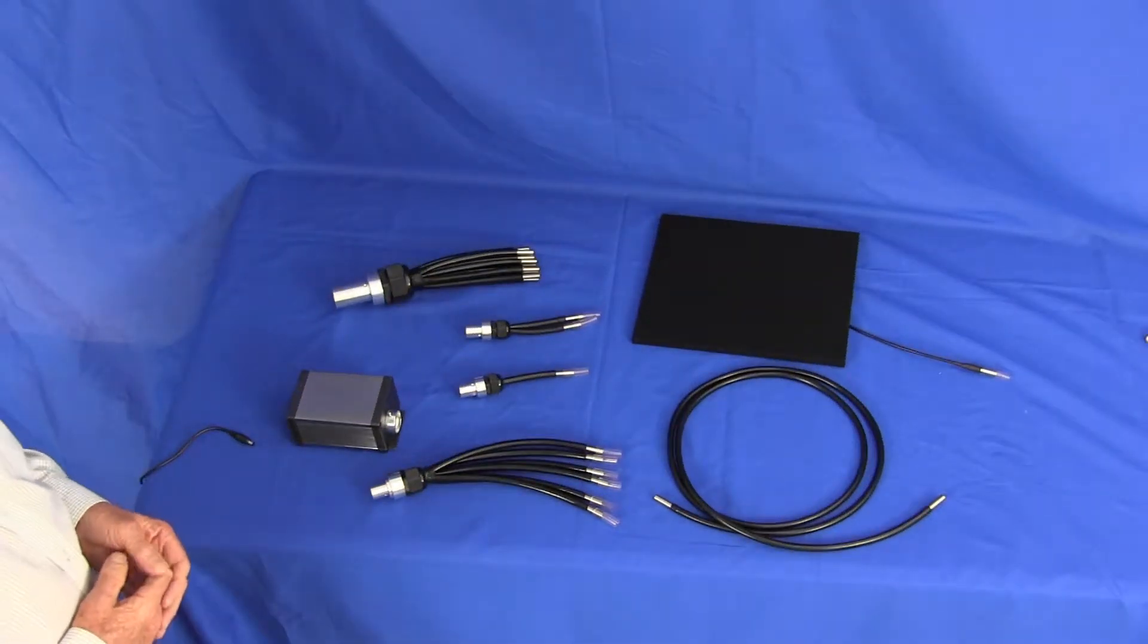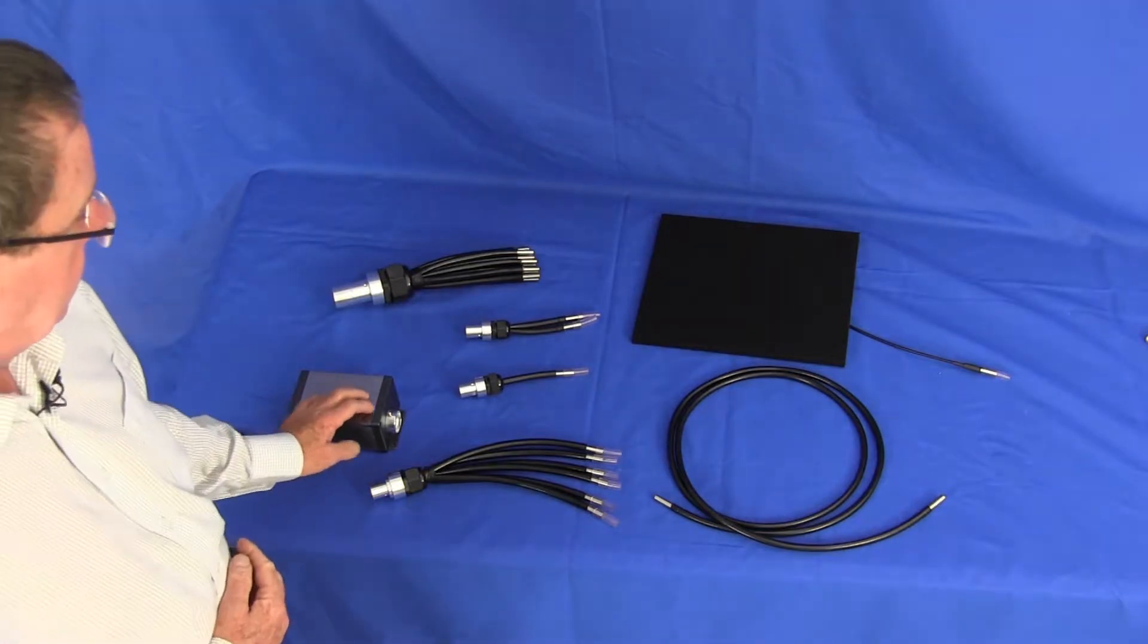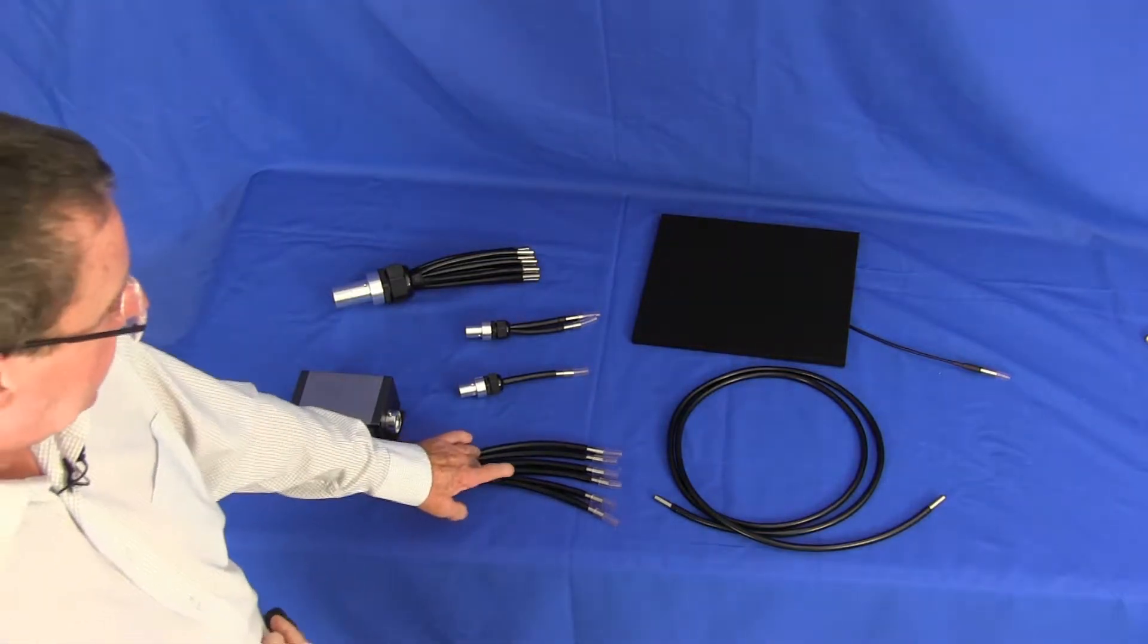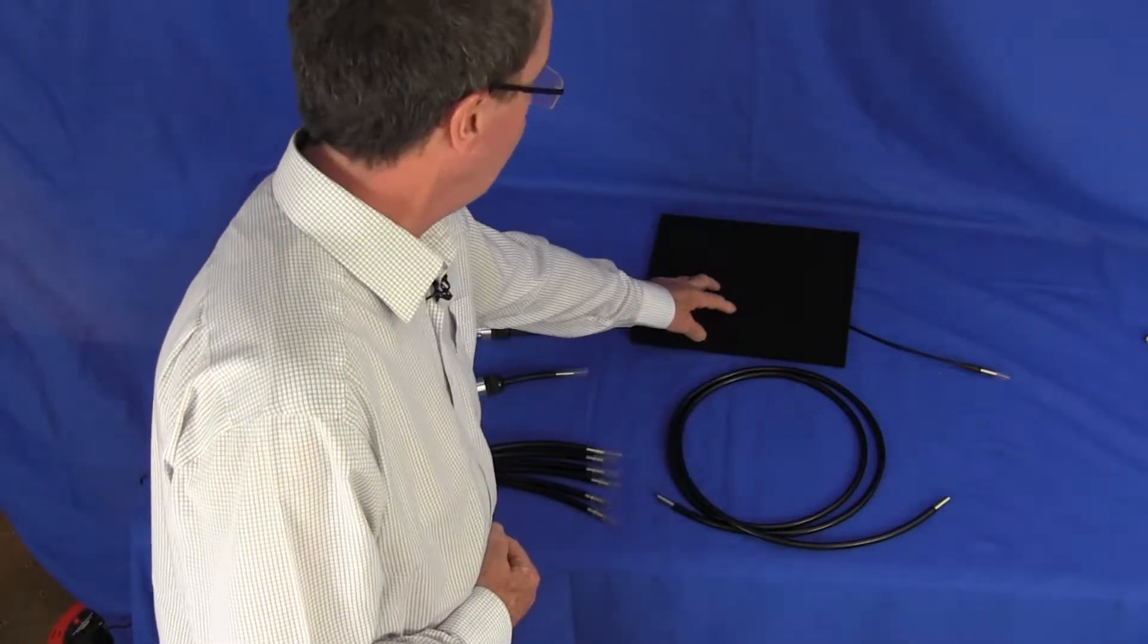Here we have the components laid out of which there are four main parts: the light source, common end and Hydra, carrier tail, and the fiber optic display that you're illuminating.